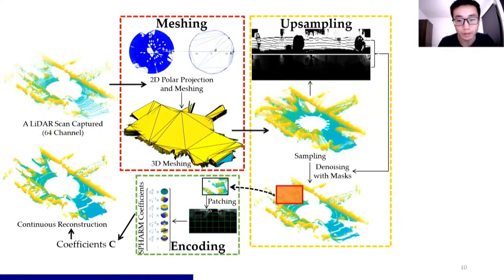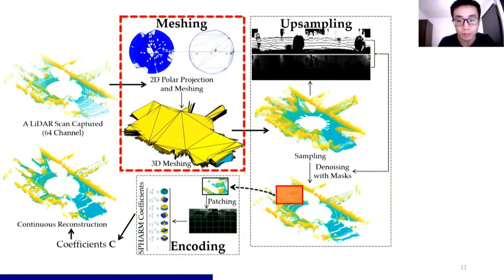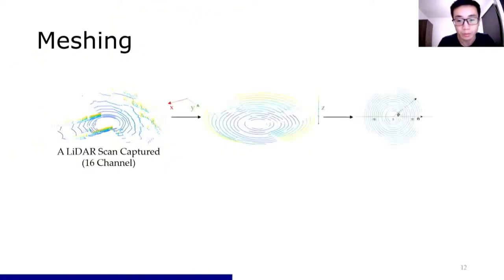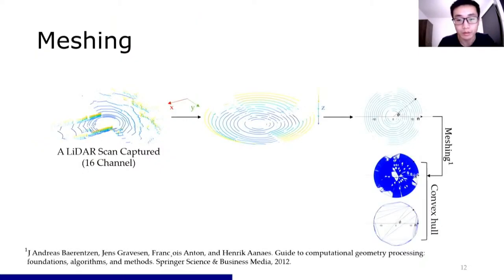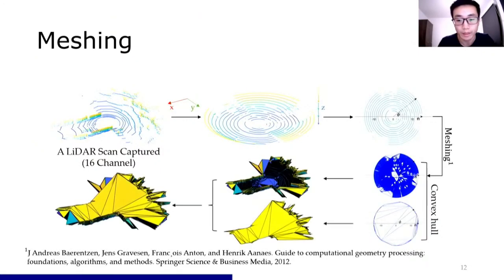So we designed the CURL pipeline to solve these problems, which mainly contains three parts: meshing, upsampling, and encoding. To solve the sparse problem, we propose a meshing method for upsampling. We first project points onto a 2D plane, then apply Delaunay triangulation. Finally, we get a watertight mesh by projecting back connectivities.